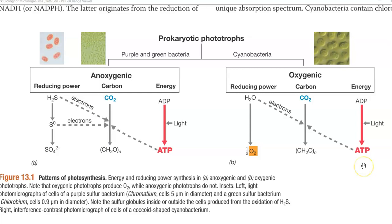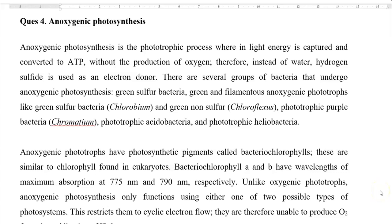Anoxygenic photosynthesis commonly takes place in purple and green sulfur bacteria. These bacteria obtain their electron supply — required for synthesizing ATP from ADP — and the generated ATP is used for fixing atmospheric carbon dioxide into cell carbon. Anoxygenic photosynthesis is a phototrophic process wherein light is captured and converted into ATP without the production of oxygen. Therefore, instead of water, certain other electron-donating molecules are required. In anoxygenic photosynthesis, it is hydrogen sulfide that acts as the electron donor.